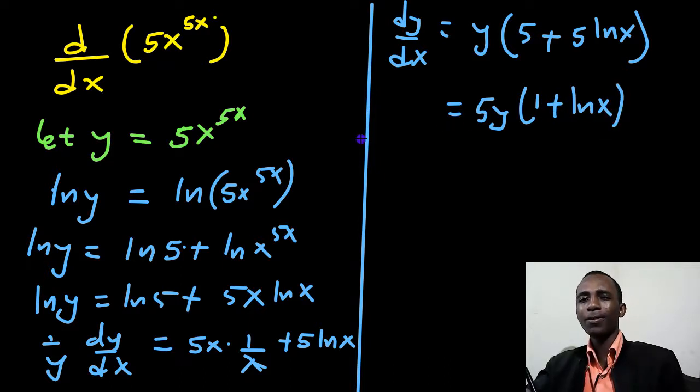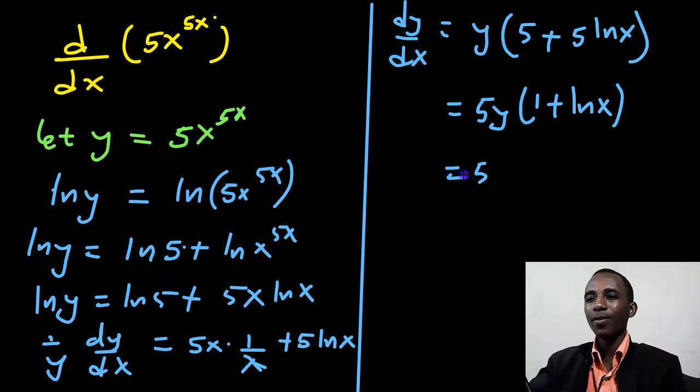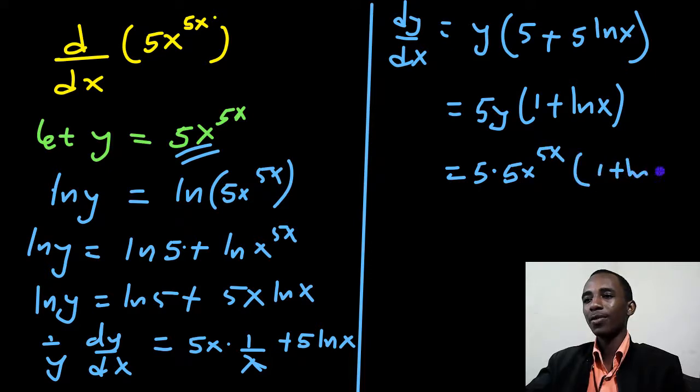But this is a derivative with respect to x. So let me substitute back for y. I put there x. So that's going to be 5 times, here we go with our y. That's 5x to the power of 5x. Open brackets, 1 plus the natural log of x.